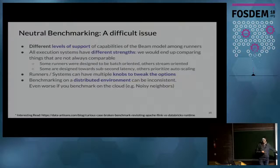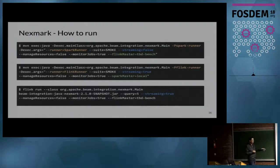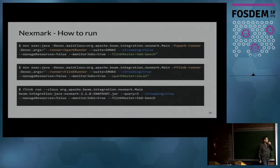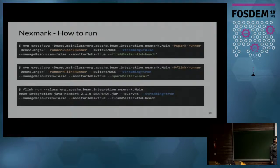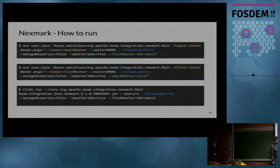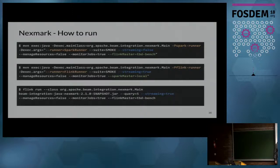Back to Nexmark — what's cool is that if you want to execute the benchmark and switch systems, you just change the runner flag: here you're executing with Spark, here with Flink. If you want to change the mode between batch and streaming data generation, you just change a switch. And if you want to run locally or on a cluster, you just change that too. This is real code.